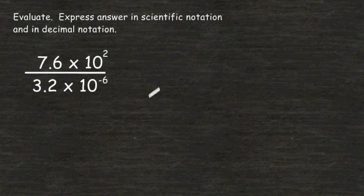In this video we are going to review how to divide something in scientific notation by something else in scientific notation. This example reads that we have 7.6 times 10 to the second power being divided by 3.2 times 10 to the negative sixth power. So what we can do is start off by dividing 7.6 by 3.2.